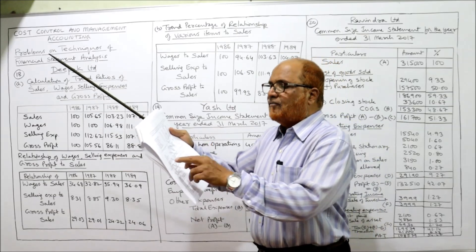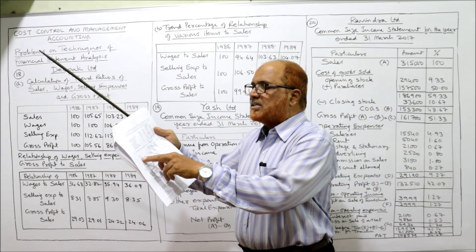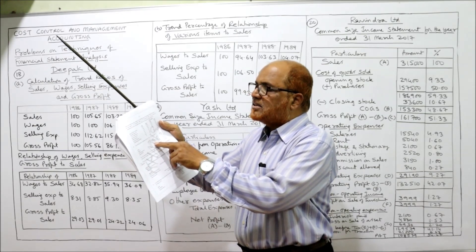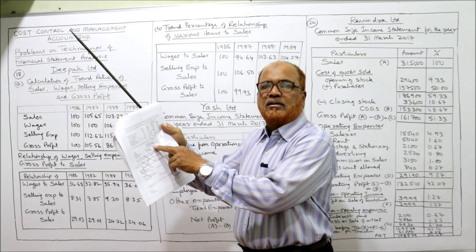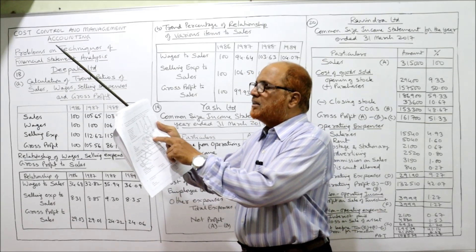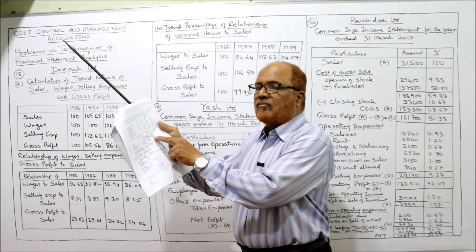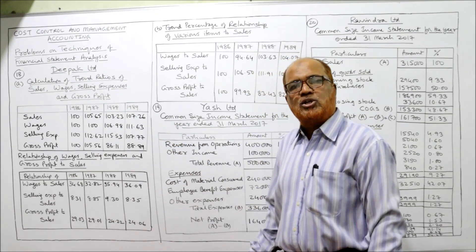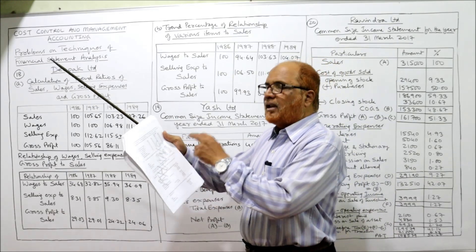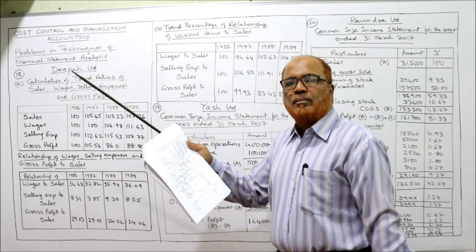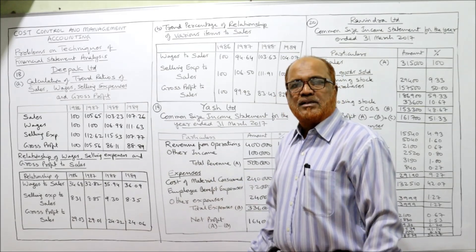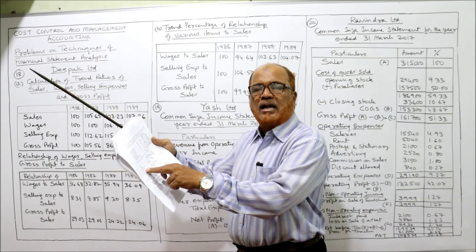Similarly for wages: the base year wages are 1,07,500. For 1987 it is again 1,07,500, so we take 100. For the third year 1,15,000: numerator 1,15,000, denominator 1,07,500 into 100 gives 106.98. Last one: 1,20,000 divided by 1,07,500 into 100 gives 111.63. Similarly we have to calculate for selling expenses and gross profit.